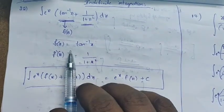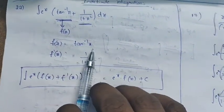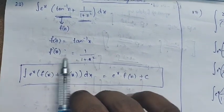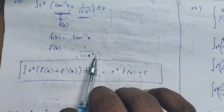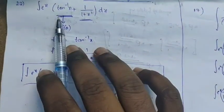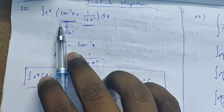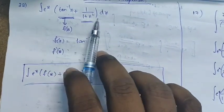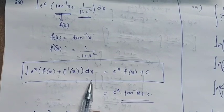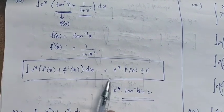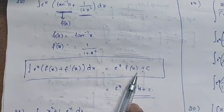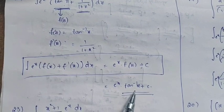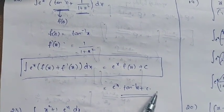If you differentiate it: f(x) = tan⁻¹(x), then f'(x) = 1/(1 + x²). So the given question is in the form of e^x · [f(x) + f'(x)]. Based on this formula, the answer is e^x · tan⁻¹(x) + constant.